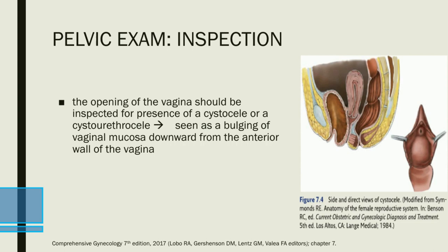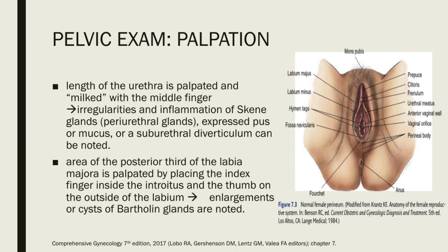The opening of the vagina should be inspected for the presence of a cystocele or urethrocele, seen as a bulging of the vaginal mucosa downward from the anterior wall. Palpation involves gently separating the labia minora, inspecting and milking the urethra with the middle finger to note any irregularities, inflammation, expressed pus or mucus, or suburethral diverticulum. Any pus expressed from the urethra should be submitted for Gram stain and culture, as it occasionally contains gonococci. The posterior third of the labia majora is palpated by placing the index finger inside the introitus and thumb on the outside to detect enlargement or cysts of the Bartholin glands, and this exam should be performed on each side.